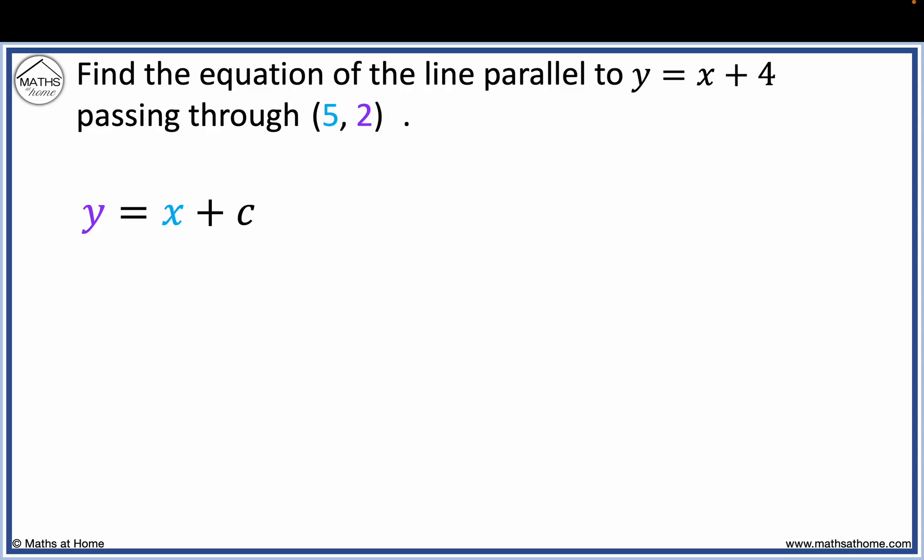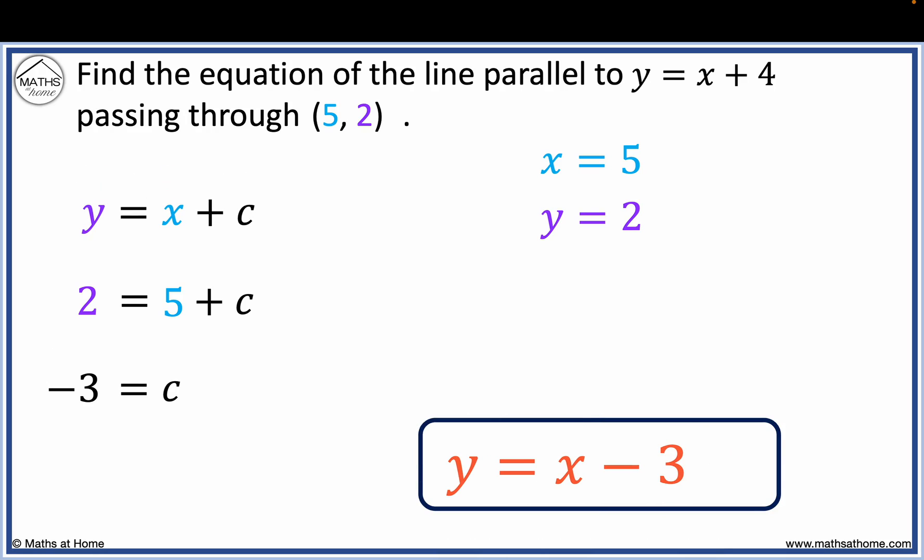We substitute x equals 5 and y equals 2 to obtain 2 equals 5 plus c. Subtracting 5 from both sides, we obtain c equals minus 3. The equation becomes y equals x minus 3.